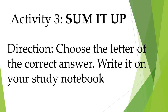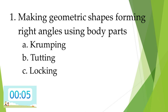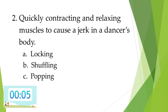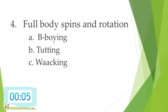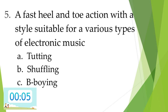1. Making geometric shapes forming right angles using body parts. A. Crumping. B. Tutting. C. Locking. 2. Quickly contracting and relaxing muscles to cause a jerk in a dancer's body. A. Locking. B. Shuffling. C. Popping. 3. A dance style for releasing anger. A. Shuffling. B. Crumping. C. Popping. 4. Full body spins and rotation. A. B-boying. B. Tutting. C. Waacking. 5. A fast heel-and-toe action with a style suitable for various types of electronic music. A. Tutting. B. Shuffling. C. B-boying.